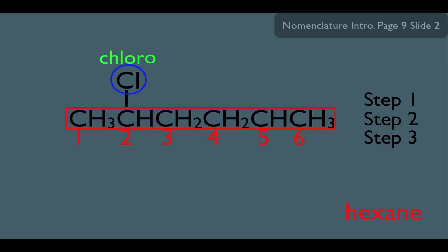That brings us to step four here. Let's put the name together. The name of this molecule is 2-chlorohexane. So this is how we're naming halogens as substituents.